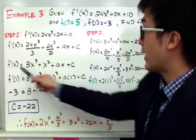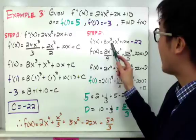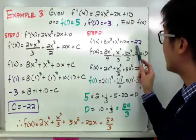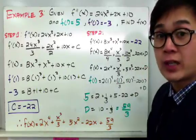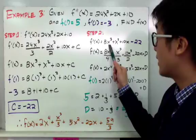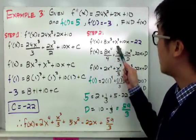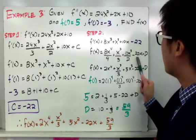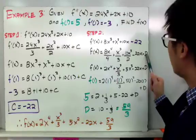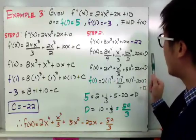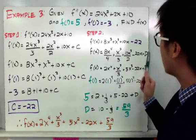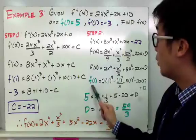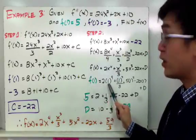For step 2, we know f prime of x equals 8x cubed plus x squared plus 10x plus C. But now that we know C is negative 22, we substitute that value. Now we perform the antiderivative to find f of x. The antiderivative of 8x cubed is 8x to the fourth all over 4. The antiderivative of x squared is x cubed all over 3. The antiderivative of 10x is 10x squared all over 2. And negative 22 becomes minus 22x, plus a new constant d. You can use any letter you wish — a, b, or c again — as long as you have a constant at the end. To find this missing constant, we use f of 1 equal to 5, plugging in the value 1 for x.